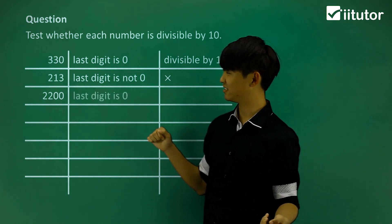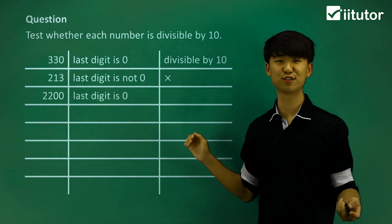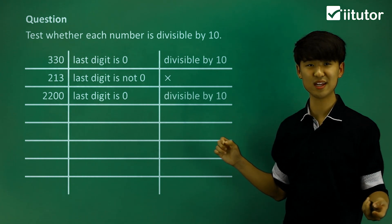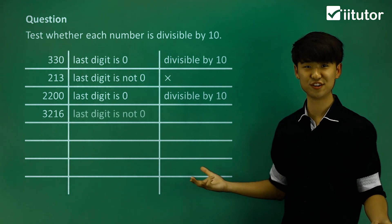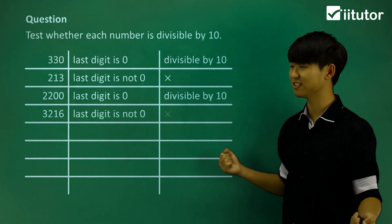This one, the last digit is 0 here, so this one is divisible by 10. This number ends in a 6, so the last digit is not 0, so this is not divisible by 10.